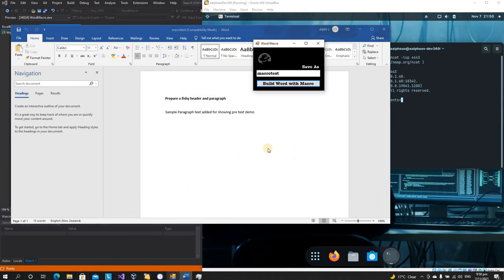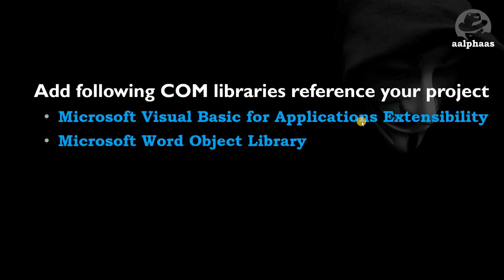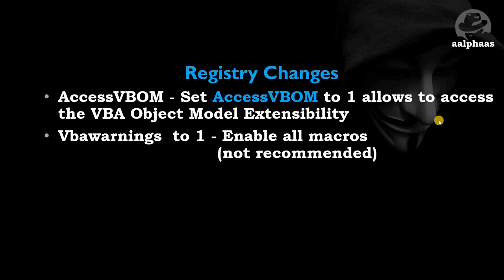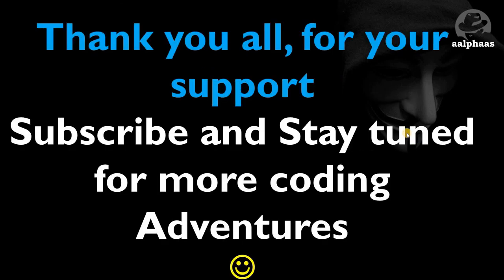I think I've covered everything planned for this video. To recap: these were the two COM libraries we referenced — the Word Object Library instead of the Excel one used for Excel automation. These were the registry values — please refer to the previous videos for more detail on what they do, or do your own research. Once again, thank you all for your support — it's really encouraging and helps me create more videos like this.